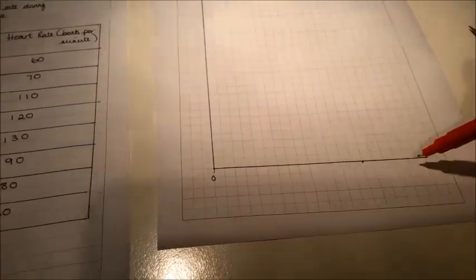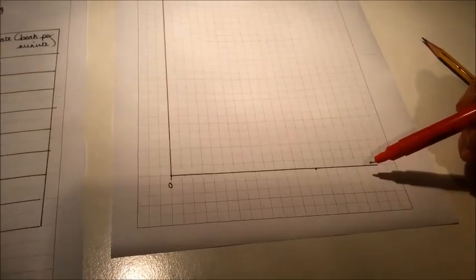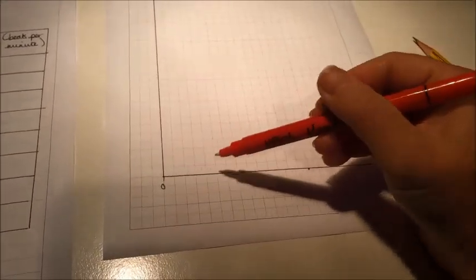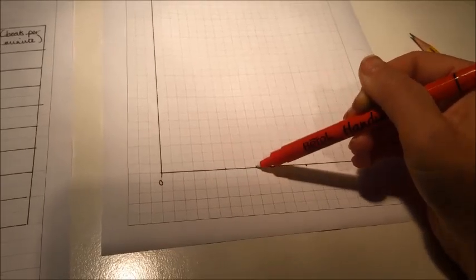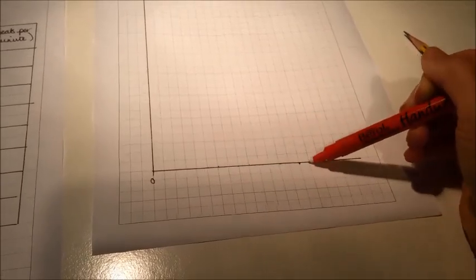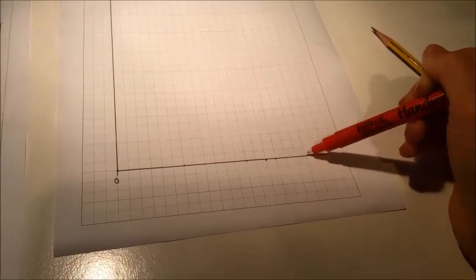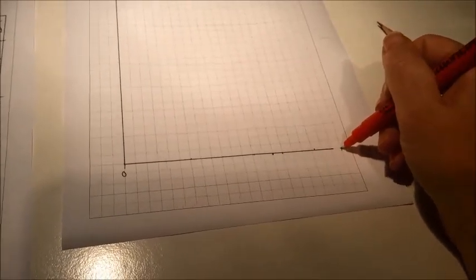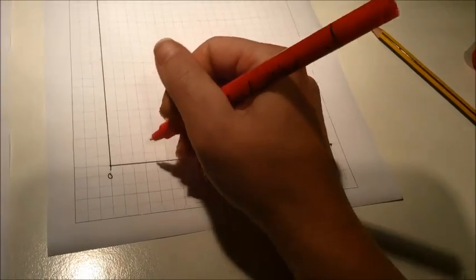We've still got some squares left over, so we could see if we can make it go a little bit further. Let's try every three squares: 30, 60, 90, 120, 150, 180, 210. So I could just put an extra little bit of line in there to make it fit in. So let's put those in.